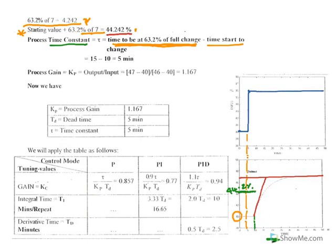From the 63.2% level, take a line until you reach the curve, then drop it down — you can read approximately 15 minutes on the time axis. The tangent line starts at t equals 10 minutes. So the time constant equals the time at 63.2% minus the starting time of the tangent line: 15 minus 10 equals 5 minutes. It is a little challenging but practice will help.